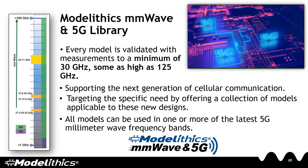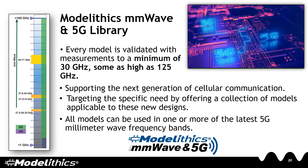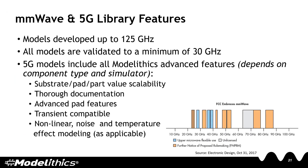Model Ethics also offers the millimeter wave and 5G library. This is a special sub-library containing models that are validated to a minimum of 30 gigahertz, with some as high as 125 gigahertz. The millimeter wave and 5G library supports the next generation of cellular communications by offering a collection of models applicable to these new designs and the frequency bands of interest. The models in the 5G library include all of Model Ethics' advanced features such as substrate, pad, and part value scalability, thorough documentation, advanced pad features, compatibility with transient simulation, and nonlinear noise and temperature effect modeling as applicable.